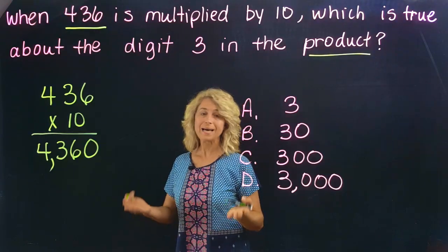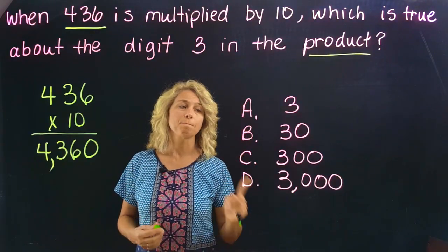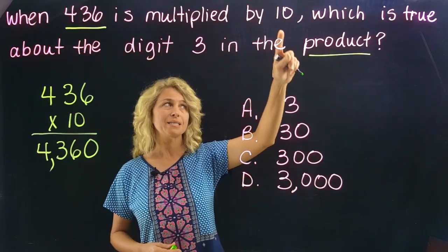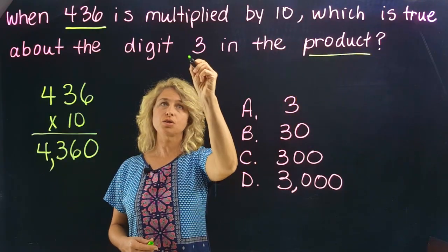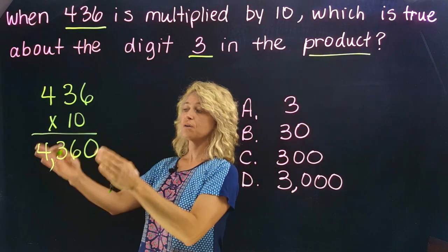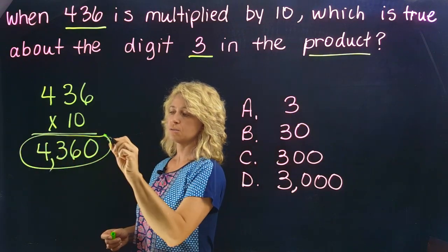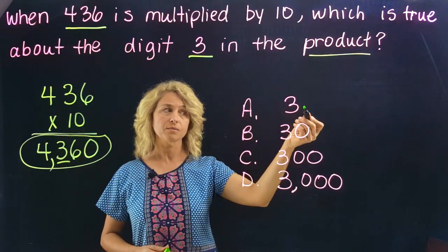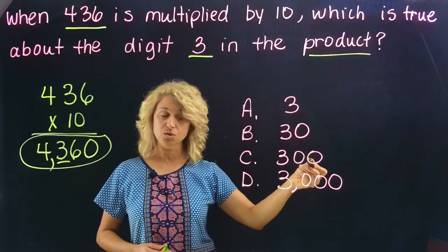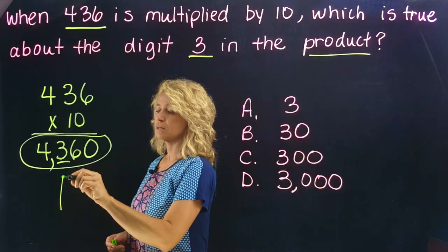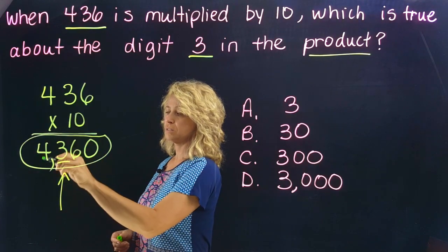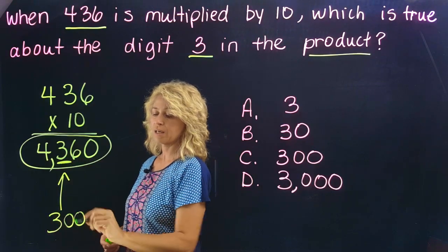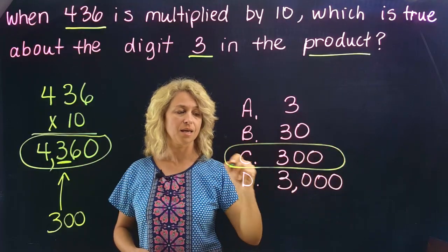Now that's the easy part and you're almost finished, but be careful. When it says 'when 436 is multiplied by 10, which is true about the digit 3 in the product' — here is your product, your answer. We're looking at the digit 3. Is the value 3, 30, 300, or 3,000? Let's look: ones, tens, hundreds, thousands — this is the hundreds place, so the value is 300. Your answer is C.